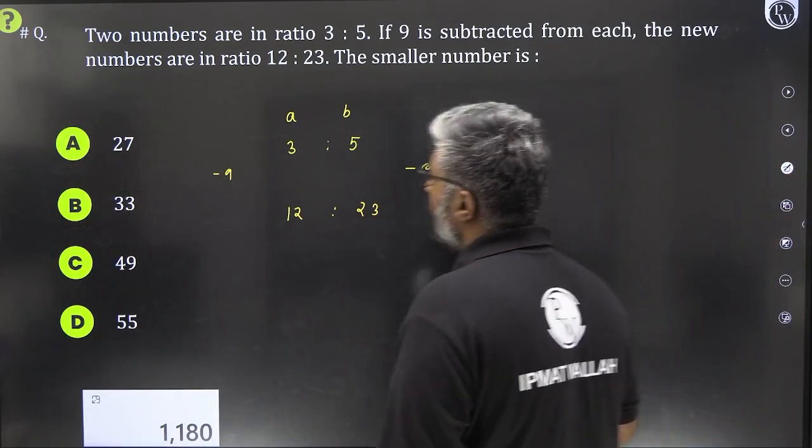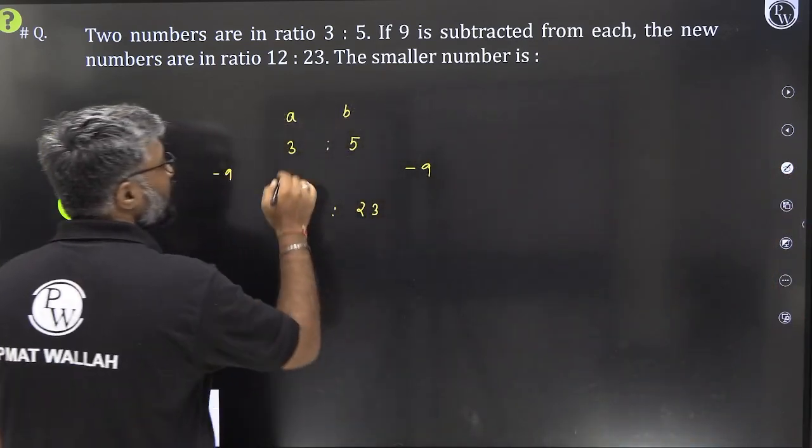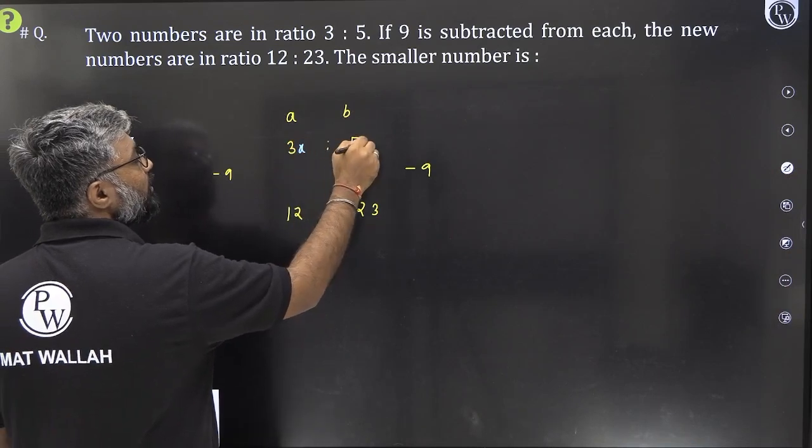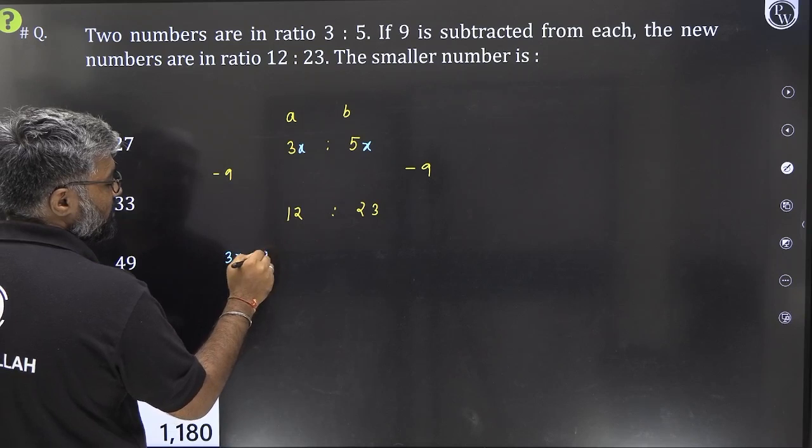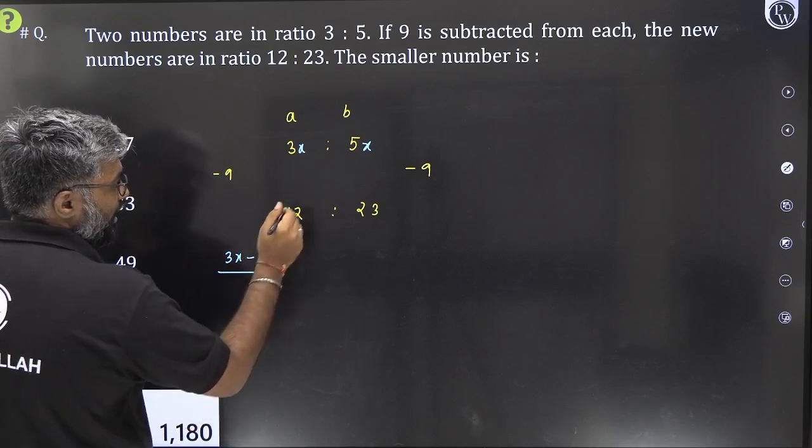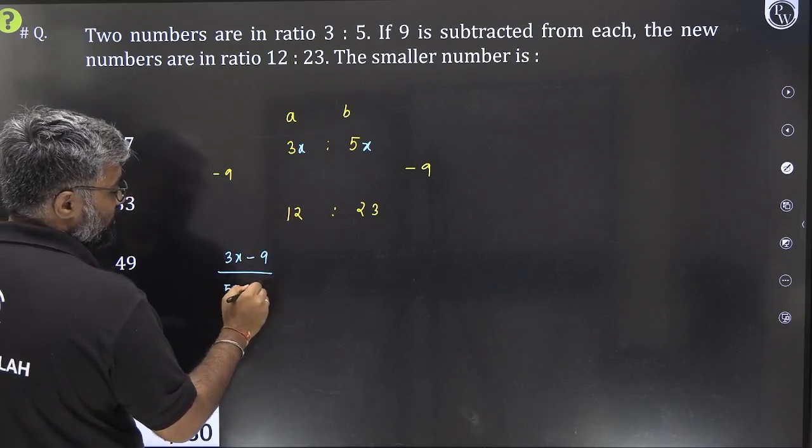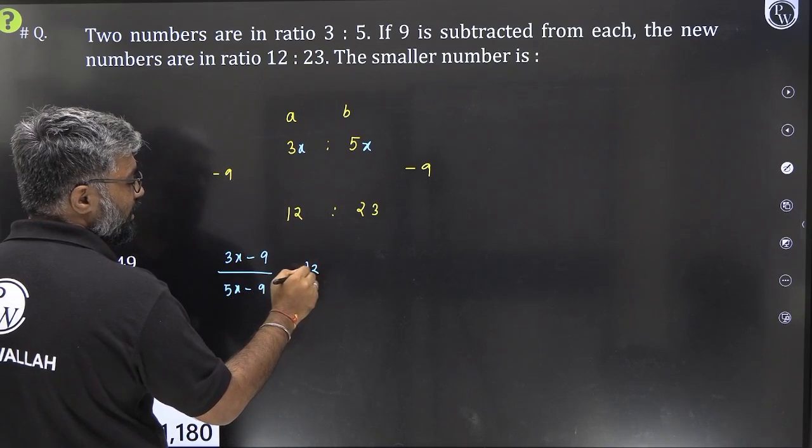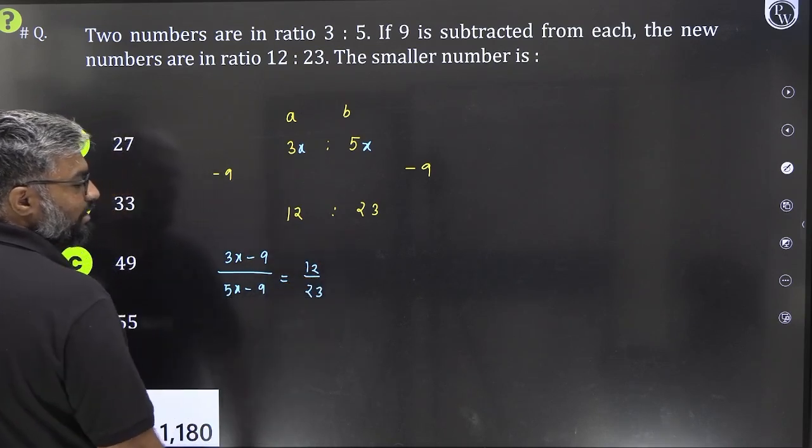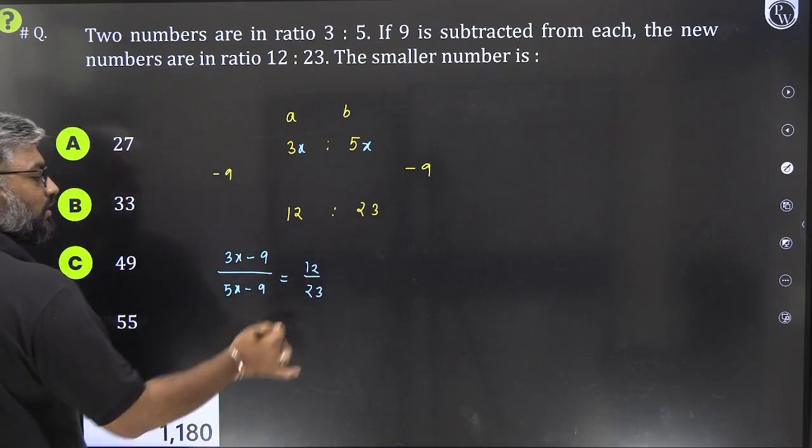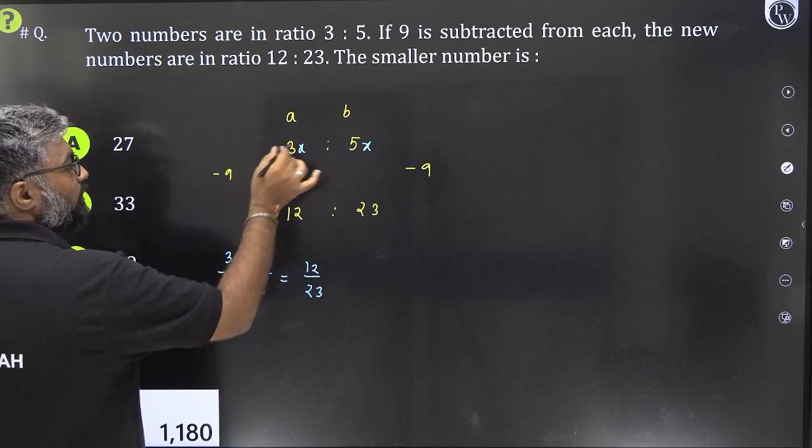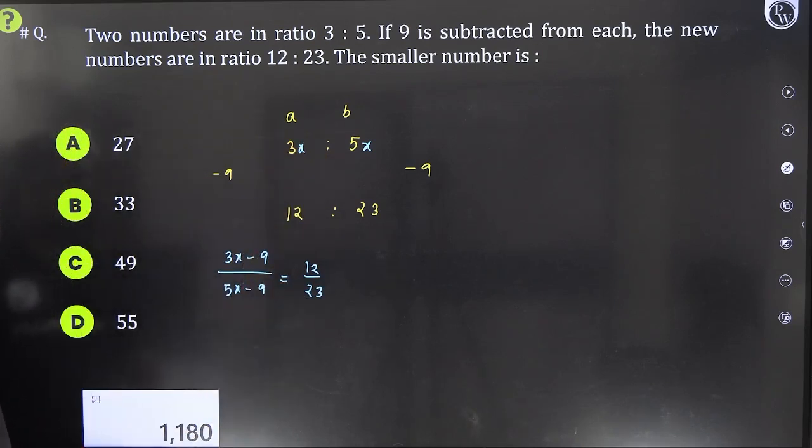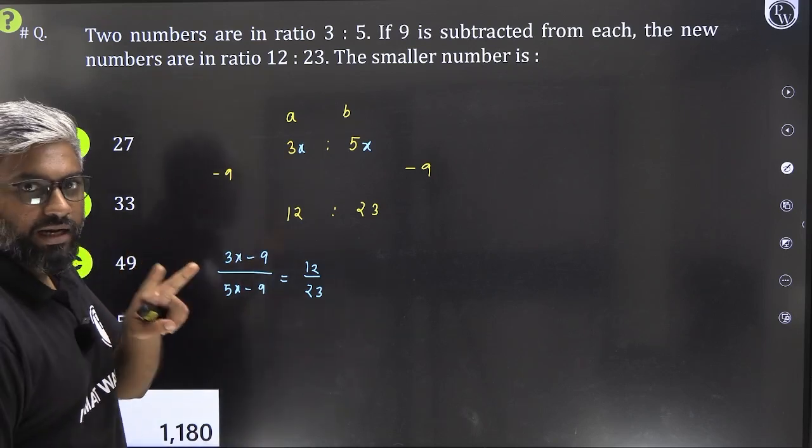So, what we do here in order to solve this, one way of doing this would be to consider some common variable say x here. So, we are saying from 3x if I were to subtract 9 and from 5x if I were to subtract 9, I would end up getting the ratio to be 12 is to 23. So, we cross multiply, find out x from there. We need 3x which is the smaller number. But if you look at the second way of doing it...